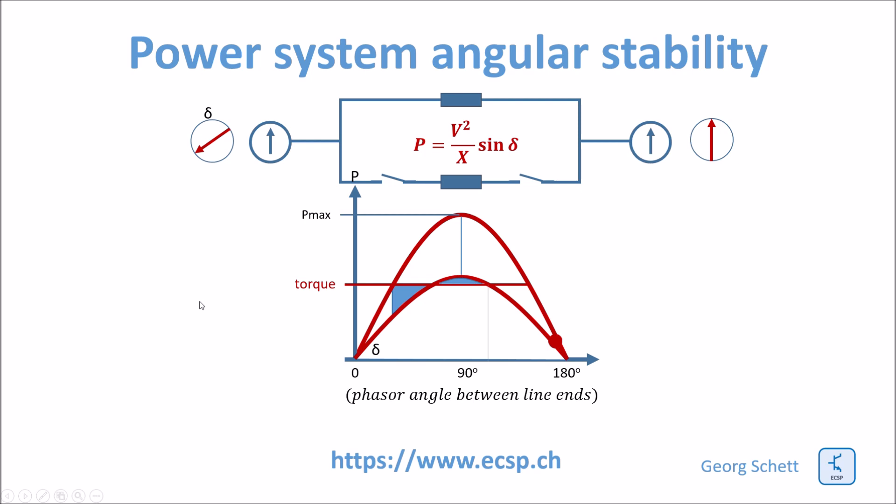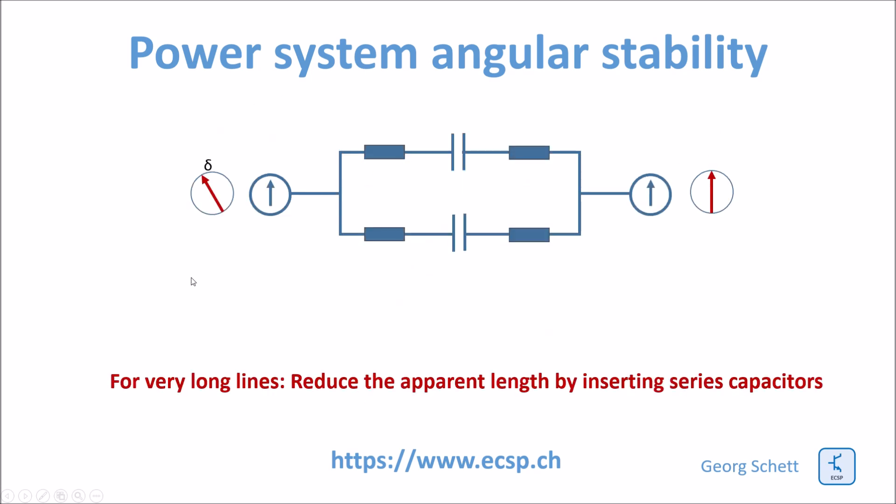So then you have very long lines of several thousand kilometers where this issue starts to play. And the point is that in order to keep the system stable under all circumstances, we can either increase the number of lines in parallel, or we can reduce the power to be transmitted, or there is another trick. What you can do is artificially reduce the apparent length of the line by adding some series capacitors to the system.